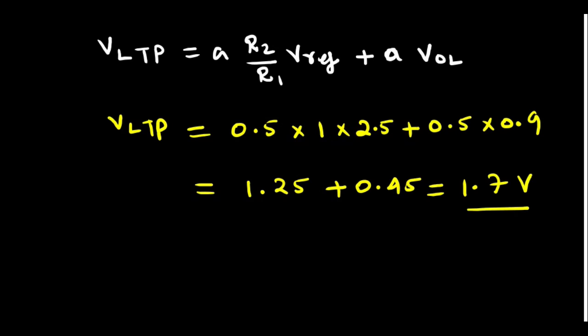So LTP is equal to 1.7V. Now what is the hysteresis? If you take the difference between UTP and LTP voltages you will get the hysteresis. We can say it's a hysteresis, some kind of noise margin, it can take care of the noise. 3.6 minus 1.7, it comes to 1.9V. So here 1.9V is the noise margin.